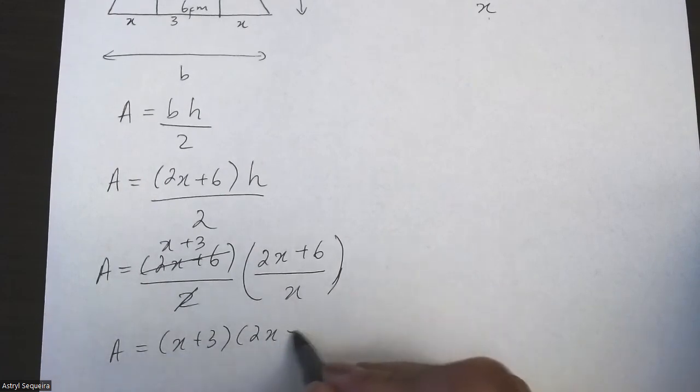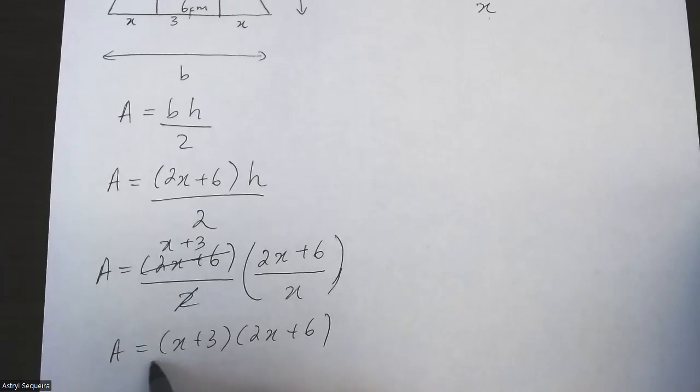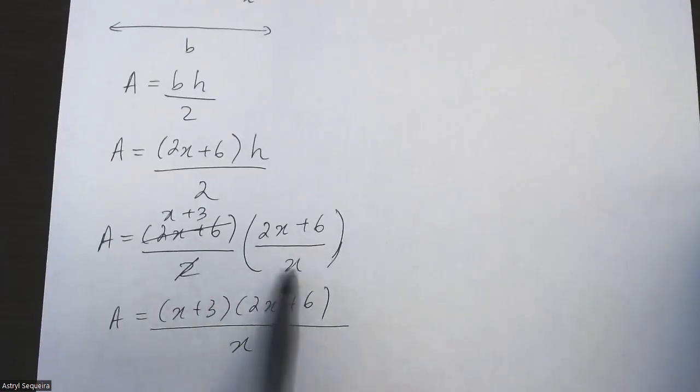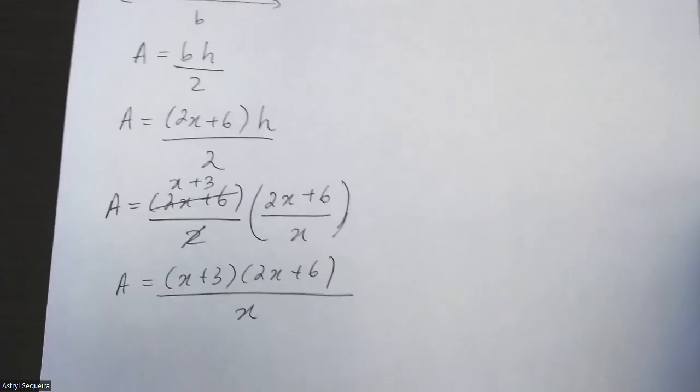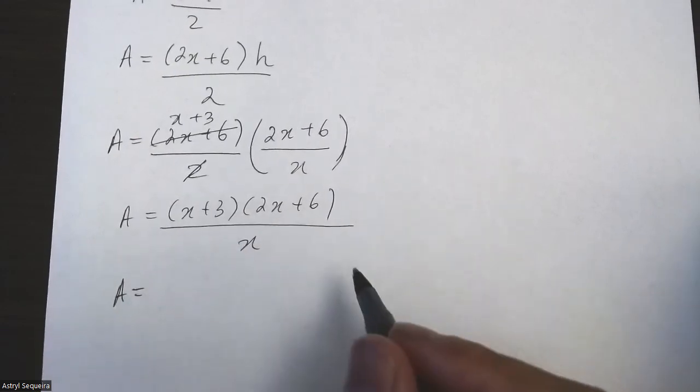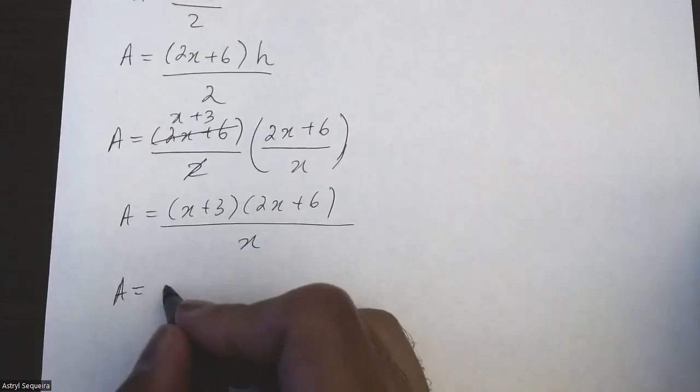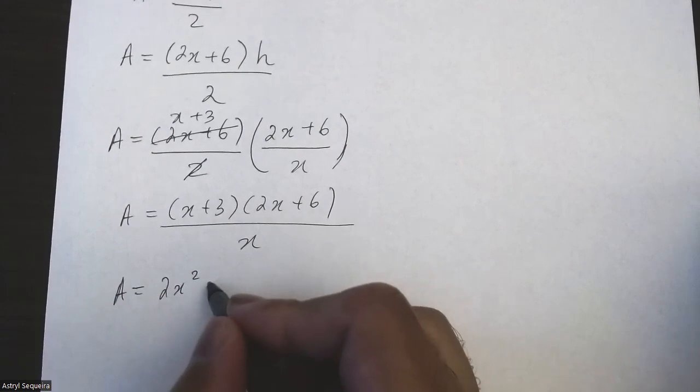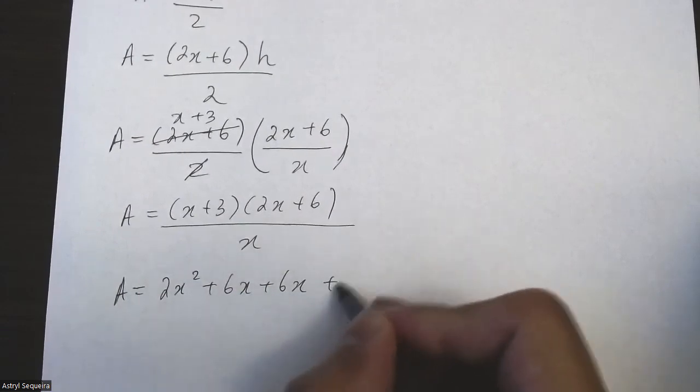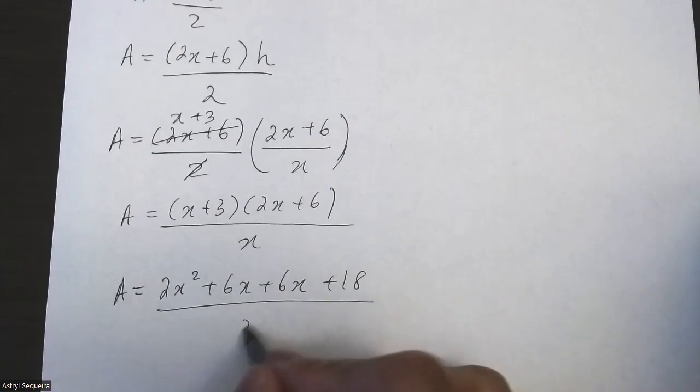So I have A equals x plus 3 times 2x plus 6, and now you can just make the denominator all over x. We want to derive this, but before we derive it's better to expand, so let's expand it out first. 2x squared plus 6x plus 6x plus 18 divided by x. That's 2x squared plus 12x plus 18 divided by x.